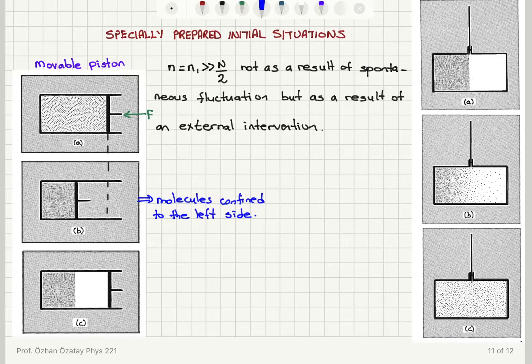So as a result of this, here I will have molecules confined to the left side. The left half is full. So what have I achieved here? The number of molecules on the left side is N. The number of molecules on the right side is 0.